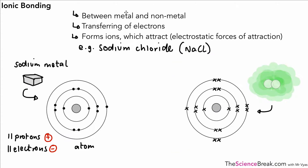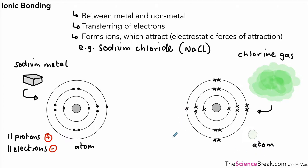If we look at an atom of chlorine — chlorine gas exists as Cl2 so there are two atoms of chlorine together, but we're just referring to one atom here for this example. If you draw out the arrangement of electrons in chlorine it would look something like that. The electrons are shown as dots in the sodium and crosses in the chlorine, just so we can follow the path of the electrons. They are both actually electrons though. Chlorine has 17 protons and 17 electrons, so they are balanced.